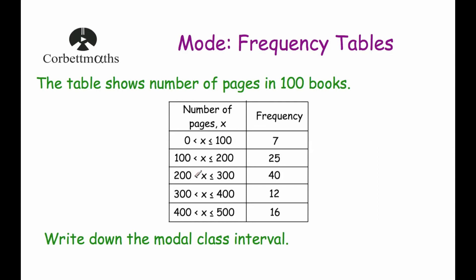Here we've got a grouped frequency table and it says the table shows the number of pages in 100 books. 7 books have between 0 and 100 pages, 25 have more than 100 but less than or equal to 200 pages, 40 books have more than 200 but less than or equal to 300 pages, 12 have more than 300 but less than or equal to 400 pages, and 16 have more than 400 but less than or equal to 500 pages. The question says write down the modal class interval — that's the interval with the highest frequency. The highest frequency is 40, so the modal class interval is 200 < x ≤ 300.